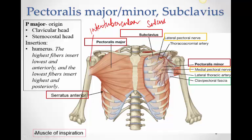Coming from the clavicle, going all the way down to the axillary floor, is a thick connective tissue called the clavipectoral fascia. As the name suggests, it runs from the clavicle in the pectoral region. It arises from the clavicle, encloses the subclavius muscle, then becomes one layer and splits to enclose pectoralis minor, then again fuses and comes down — it's a very thick fascia present in this region.